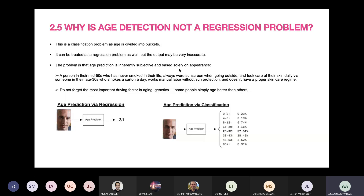Age detection can be treated as a regression problem, but the output may be very inaccurate. This happens because age prediction is very subjective and based solely on appearance. Consider a person in their mid-50s who has never smoked, always wore sunscreen, and had good skincare, versus someone in their late 30s who smokes heavily, works manual labor, and has no sun protection. The most important driving factor in aging is genetics — some people simply age better than others.